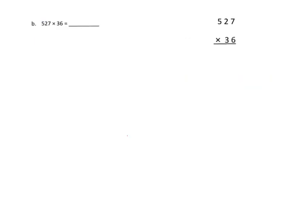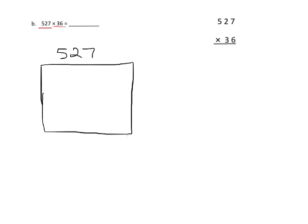In this problem, when we are multiplying 527 times 36, we're going to begin by using the area model, and we're going to think of this as a rectangle. Our rectangle is going to kind of look like this, and I'm not trying to draw it proportionally. I'm just using this as a representation. Our rectangle is 527 units wide and it's 36 units high, but we're going to break that up into 30 and 6.